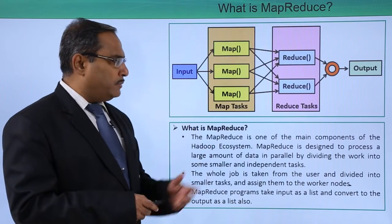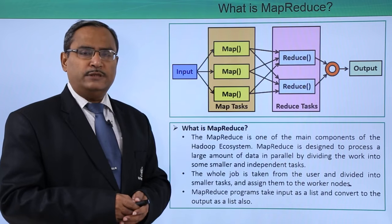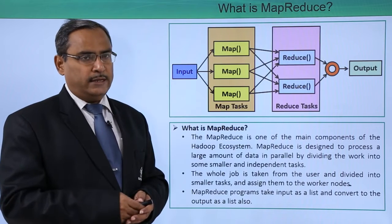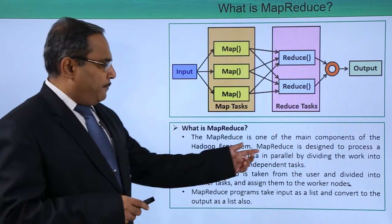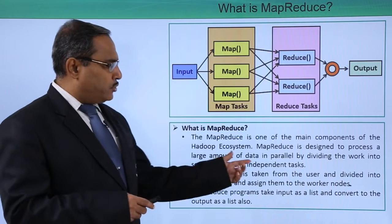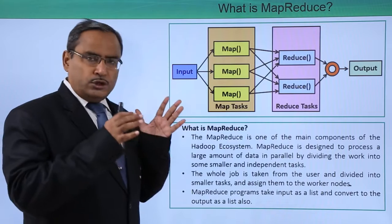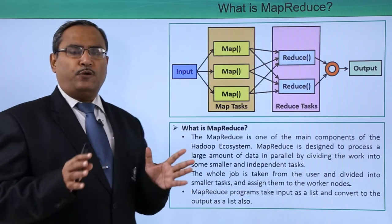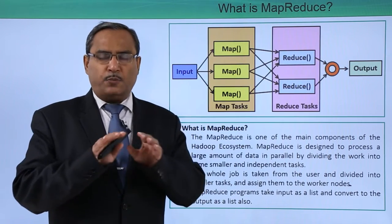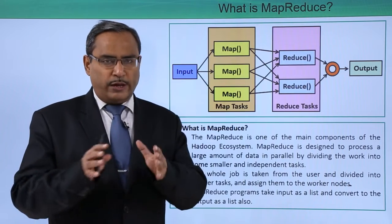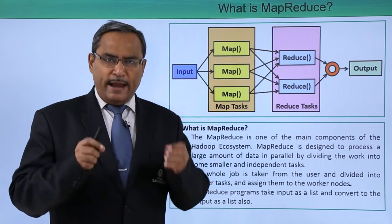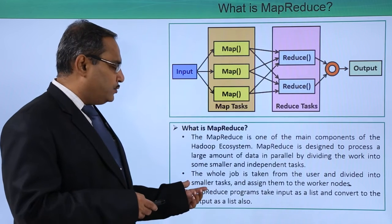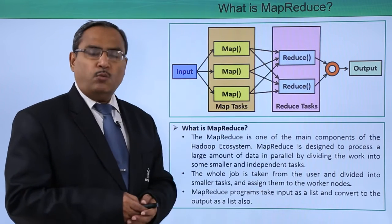MapReduce is one of the main components of the Hadoop ecosystem — we have discussed the many components under this ecosystem before. MapReduce is designed to process a large amount of data in parallel by dividing the work into smaller pieces and independent tasks. The large amount of data will not be processed at a time; it will be divided into smaller pieces, assigned to working nodes, and those tasks will be executed in parallel for faster processing.